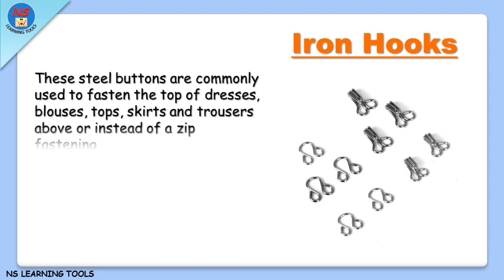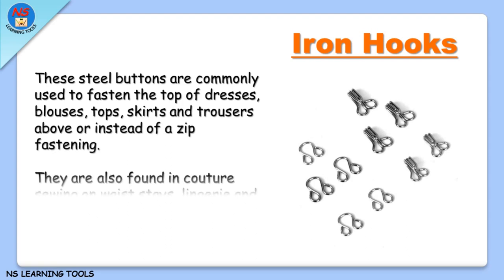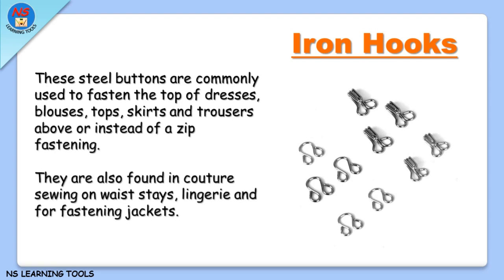Iron hooks. These steel buttons are commonly used to fasten the top of dresses, blouses, tops, skirts, and trousers, above or instead of a zip fastening. They are also found in sewing on waist stays, lingerie, and for fastening jackets.